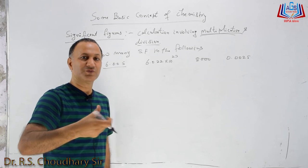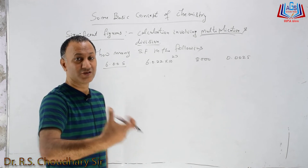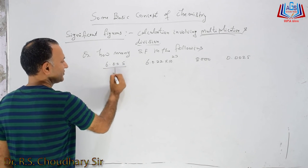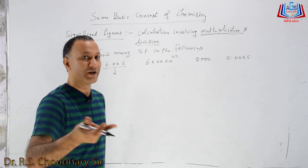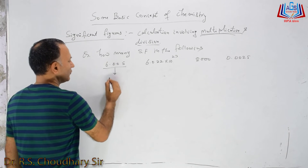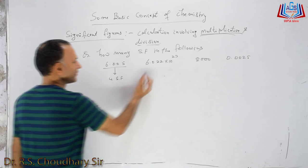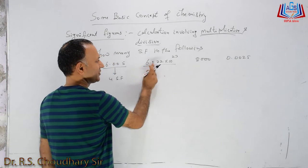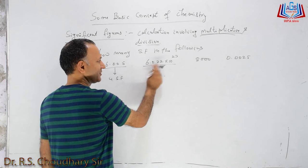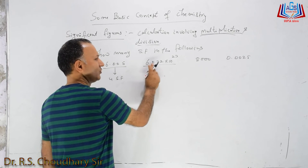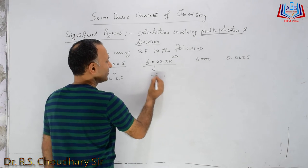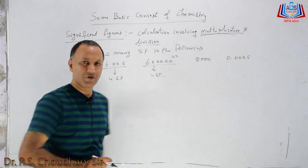For 6.005: our first rule states that if a zero is between two non-zero digits, it becomes significant. So the zero between 6 and 5 is significant: 1, 2, 3, 4 — there are 4 significant figures. For 6.02 × 10²³: the zero is between 6 and 2, which are both non-zero digits, so it is significant — again 4 significant figures.